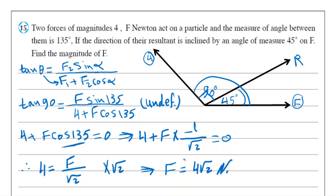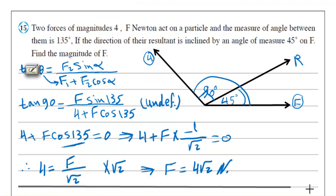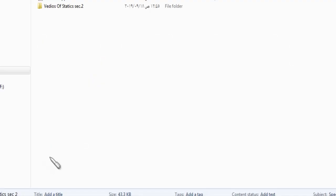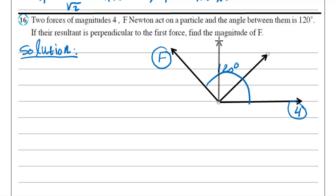Now we will go to question number 16. Two forces of magnitude 4 — that is the first force — and a second force F, act on a particle and the angle between them is 120 degrees. If the resultant is perpendicular to the first force, we must draw the resultant perpendicular to 4, so the measure of this angle equals 90 degrees.